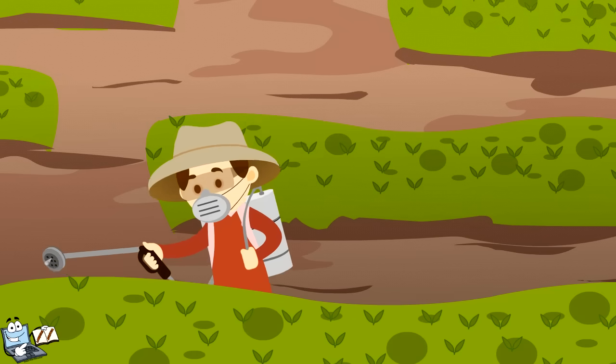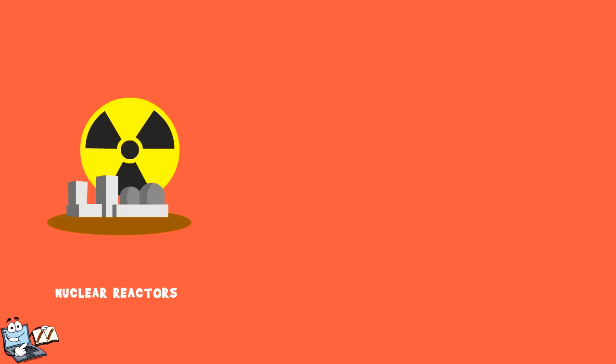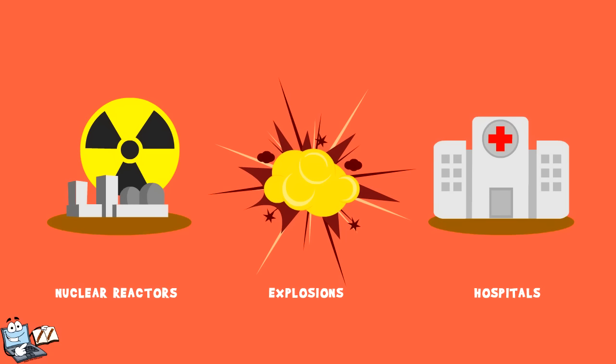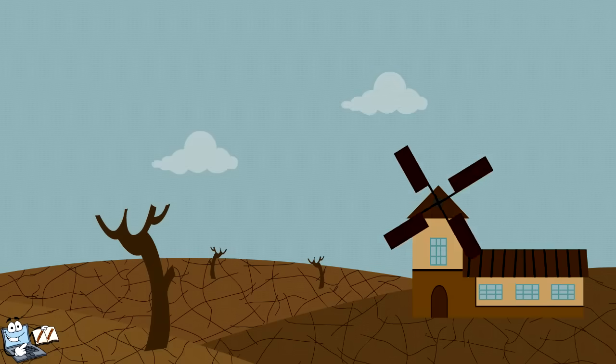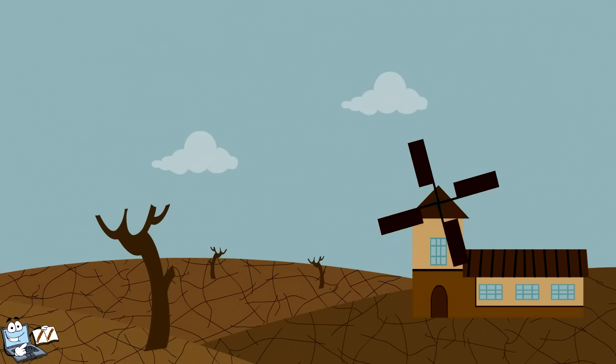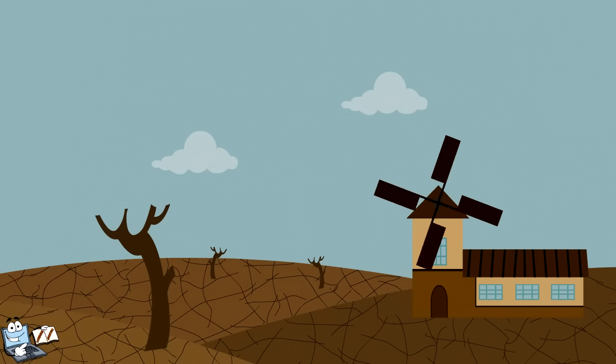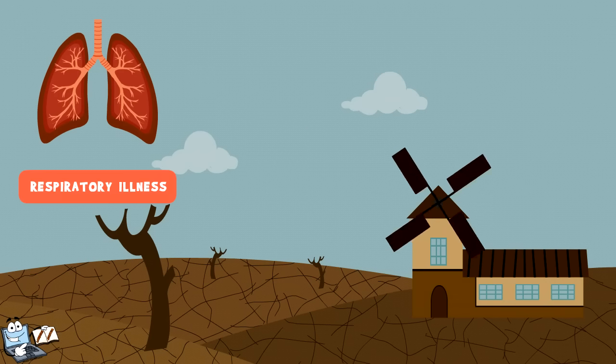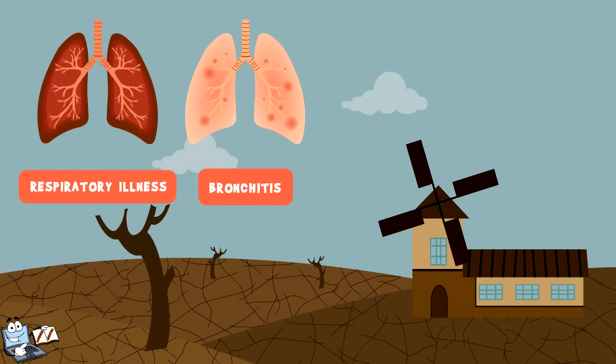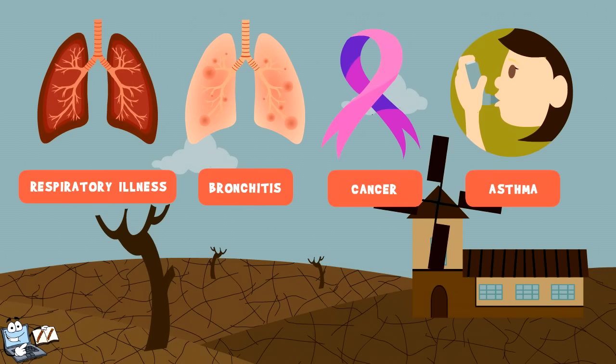The radioactive pollutants from some sources, like nuclear reactors, hospitals, explosions, and more, go very deep into the soil and remain there for a long time and cause soil pollution. All of the soil contaminants are getting mixed into the fertile land and it causes a variety of health disorders, such as respiratory illness, bronchitis, cancer, and asthma.